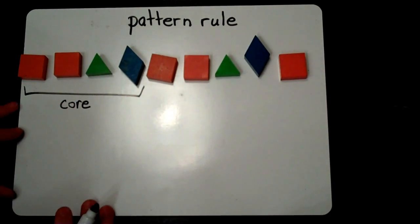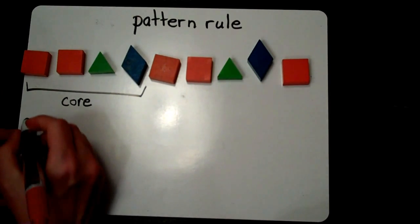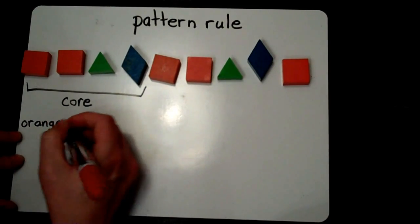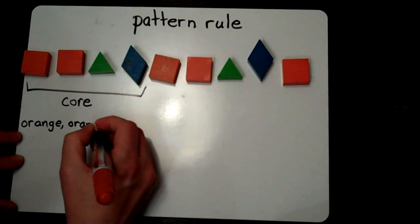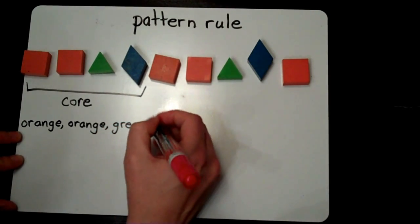I'm going to record in words, I'm going to describe in words the pattern core. When I do that I write a pattern rule. The pattern rule for this pattern is orange, orange, green, blue.